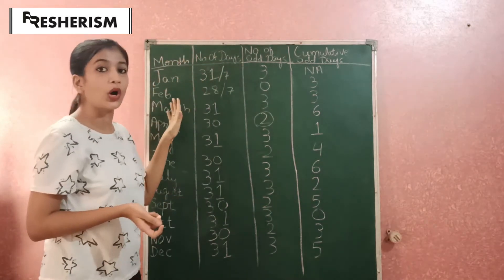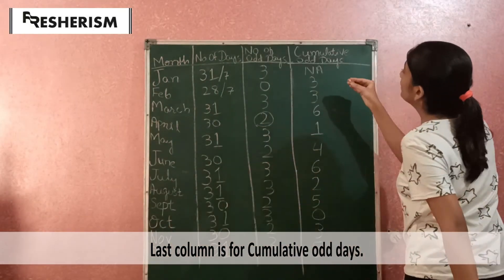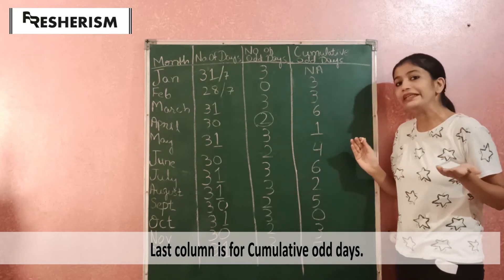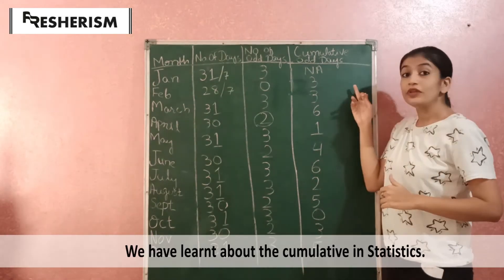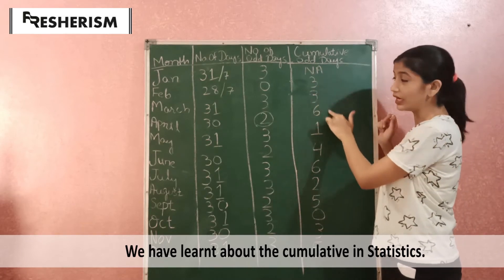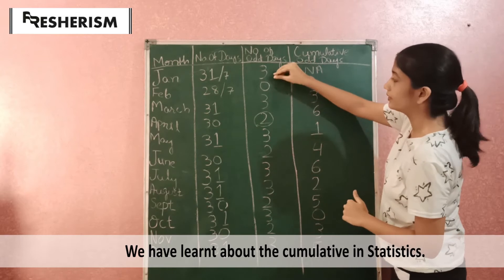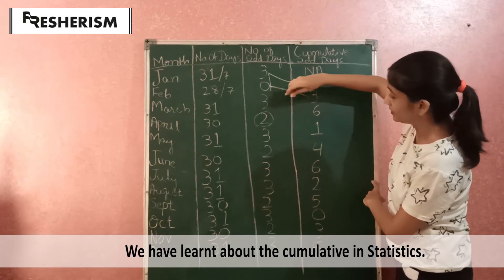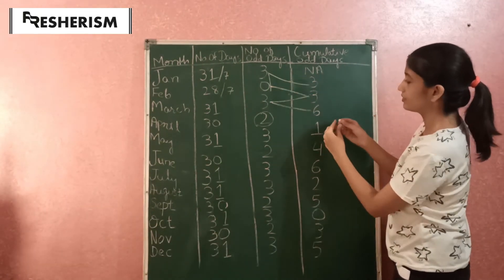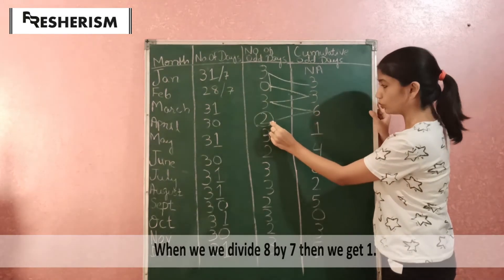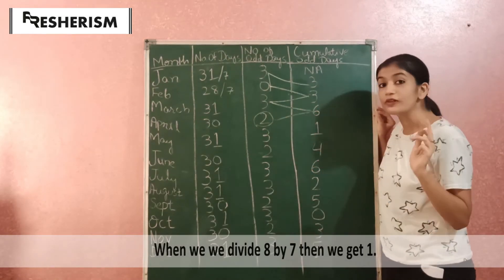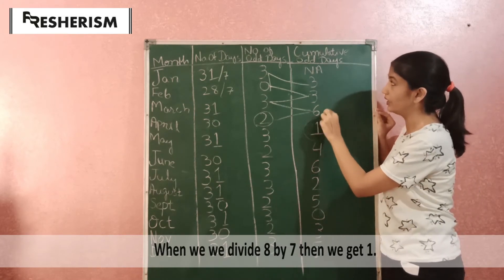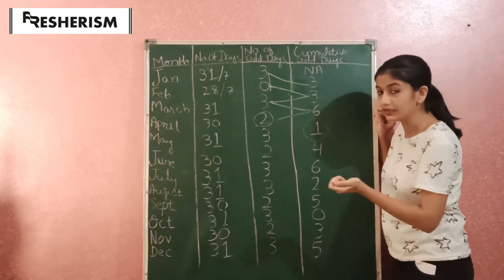This is a chart of odd days in every month. The last column is cumulative odd days — similar to cumulative frequencies in statistics. Starting: 3, then February has 0, so 3 plus 0 equals 3. Then 3 plus 3 equals 6. Then 6 plus 2 equals 8, but if we divide 8 by 7, the remainder is 1, so the cumulative odd days become 1. The table continues similarly.